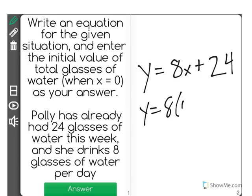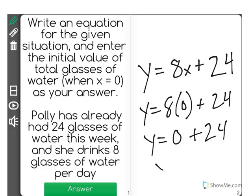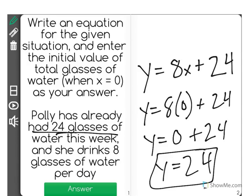Well, we could find that out by putting a 0 for x, and we know 8 times 0 is 0. And all you have to see here is that she drank 24 glasses before we started measuring. She's already had that much, so that is the initial value.